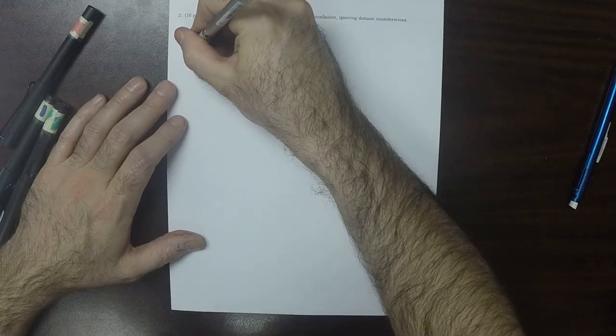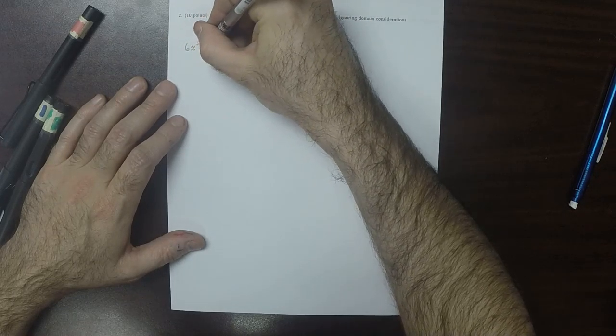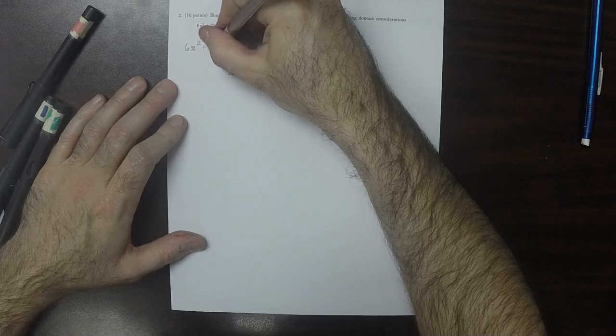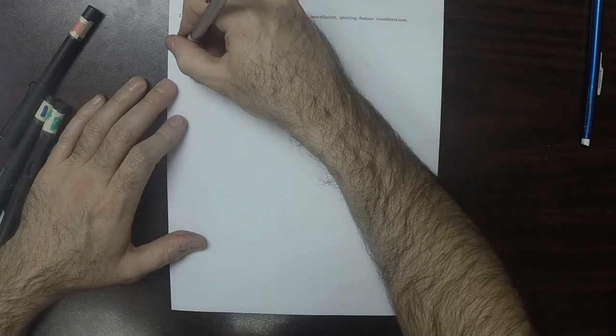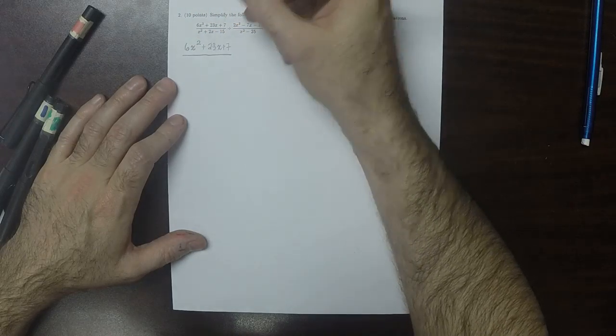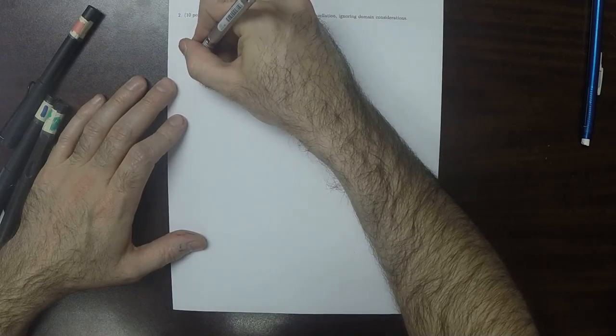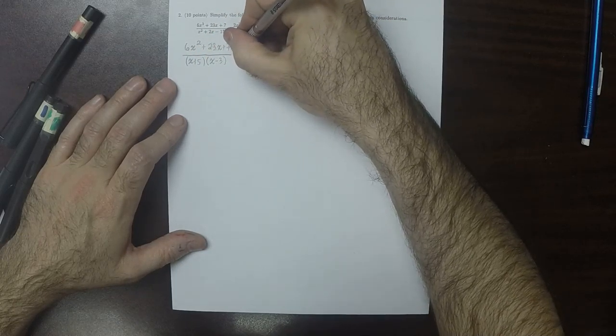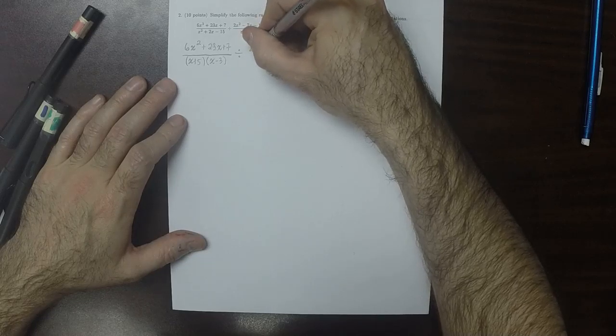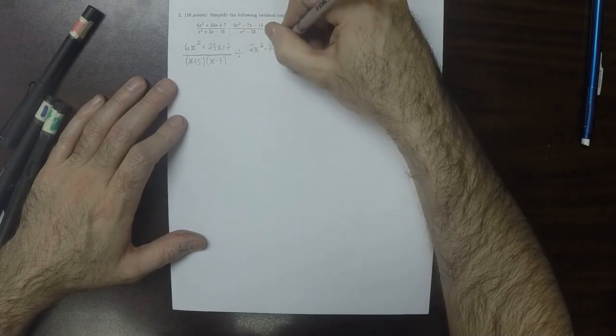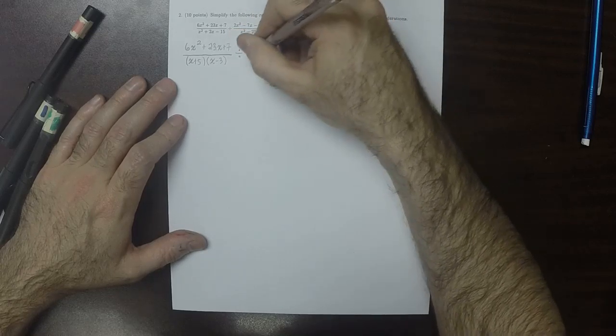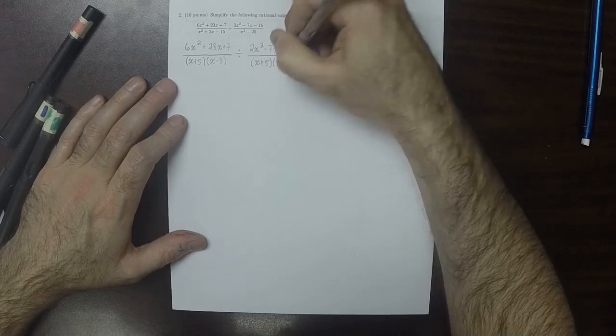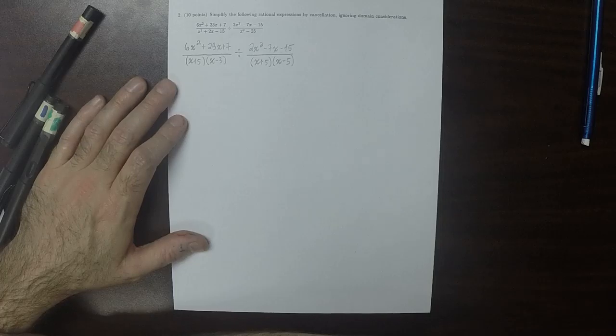So this would be, just leaving those numerators for a moment, 6x squared plus 23x plus 7, and then that factors as what? So we're going to divide 2x squared minus 7x minus 15, over x plus 5 times x minus 5.